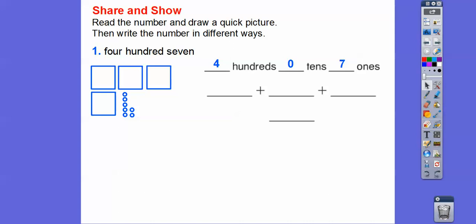So this is going to be 400 right there. This is going to be 0 plus 7. 400 plus 0 plus 7 is 407. Let's do that with this one.